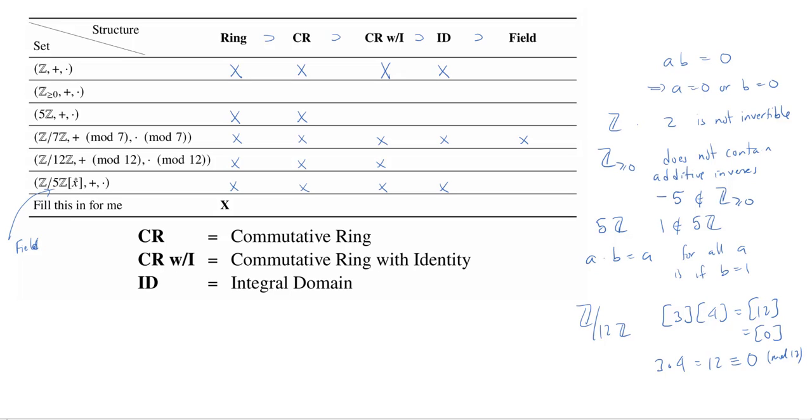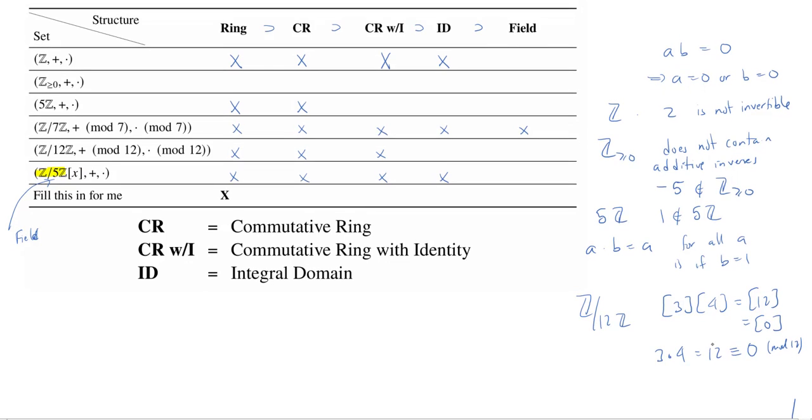Now is it a field? Well, I pointed this arrow here at Z mod 5Z. And you might have thought, oh, the whole thing is a field. But no, it's just the coefficient ring, which is a field. The polynomial ring is not a field because you still can't invert x. So we'll make a little room down here.